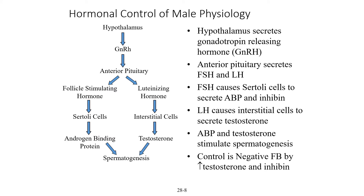Spermatogenesis — sperm means sperm, genesis means to create — is the creation or formation of sperm. This occurs in males after puberty and the process of sperm creation and maturation takes about 74 days. Testes can produce 200 to 300 million sperm per day, but only about 1 million become actually viable sperm capable of penetrating the egg. The amount of sperm produced works on a supply and demand basis based on frequency of release.